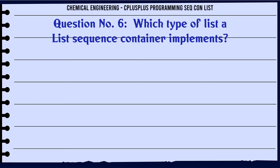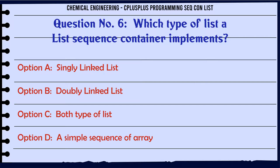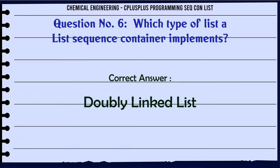Which type of list does a list sequence container implement? A. Singly linked list. B. Doubly linked list. C. Both types of list. D. A simple sequence of array. The correct answer is: doubly linked list.